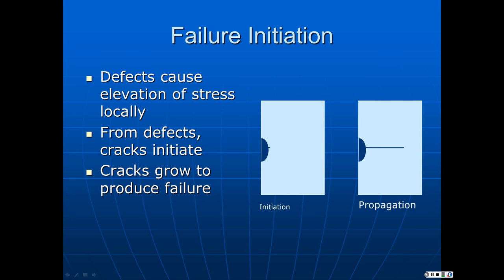The general approach in most mass engineering — when you're engineering automotive parts, appliances, or whatever — is to use an initiation approach: we try to prevent cracks from starting. But when dealing with very high-cost or high-risk structures like airplanes, bridges, pipelines, or turbines where replacement is very expensive, we can't necessarily prevent the formation of a crack from a flaw, but we can prevent propagation or monitor propagation. Any part that fails is going to fail by formation and growth of a crack — those are always going to be the stages in the process of failure.